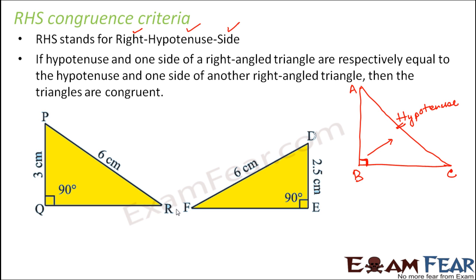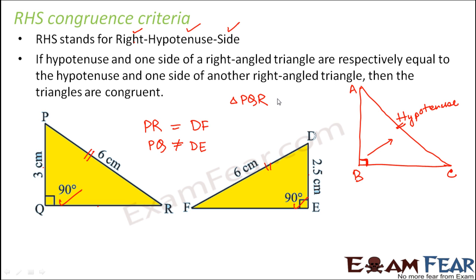Now let us look at this example where we have triangle PQR right angled at Q, and triangle DEF right angled at E. We already have one right angle in both. The hypotenuse of PQR is PR and the hypotenuse of DEF is DF, and PR equals DF equals 6 centimeters, so hypotenuse is equal. Now comparing one side: PQ is not equal to the corresponding side DE. Since this side is not equal, therefore triangle PQR is not congruent to triangle DEF.